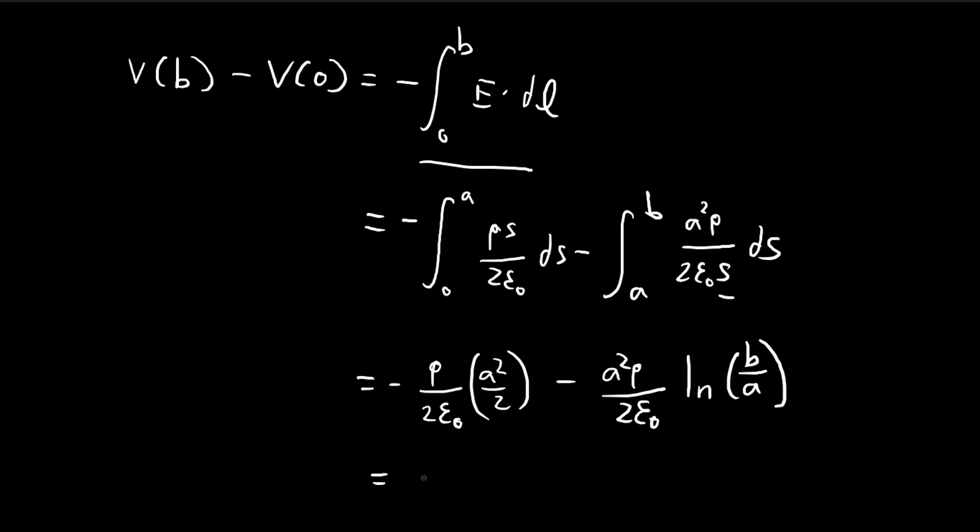We can group these terms together to clean up our answer. We can pull out the a square as well, so you get one-half plus natural log b over a.